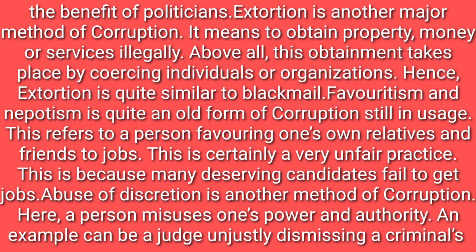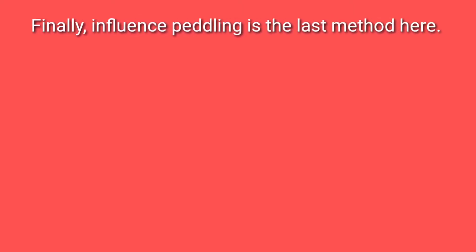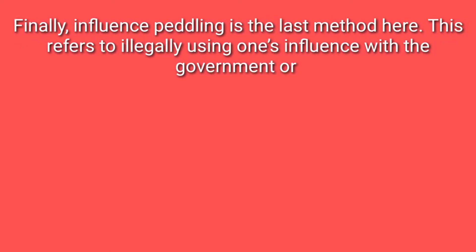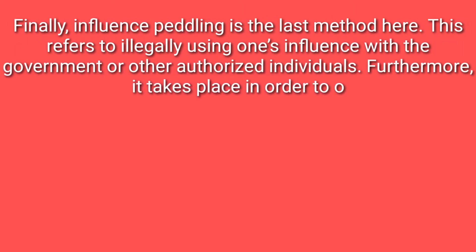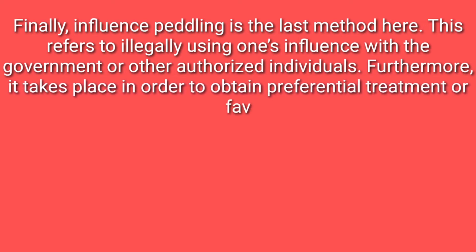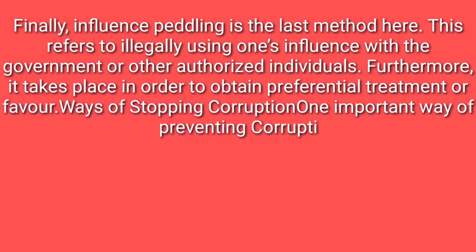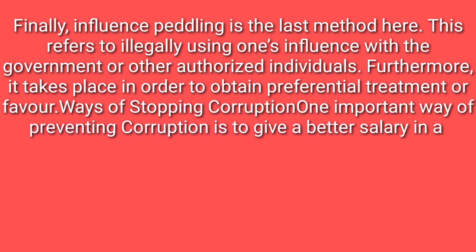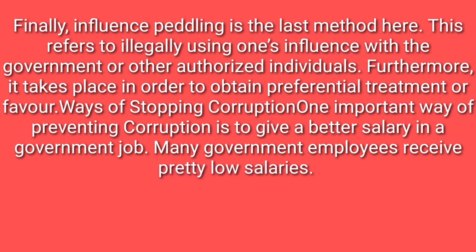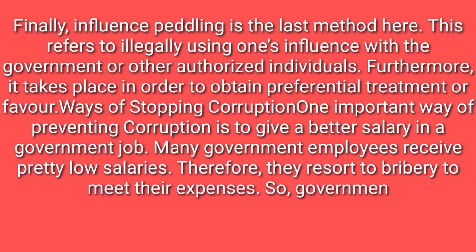Abuse of discretion is another method of corruption. Here, a person misuses one's power and authority. An example can be a judge unjustly dismissing a criminal's case. Finally, influence peddling is the last method here. This refers to illegally using one's influence with a government or other authorized individual in order to obtain preferential treatment or favor.